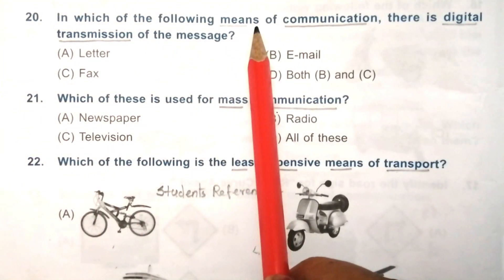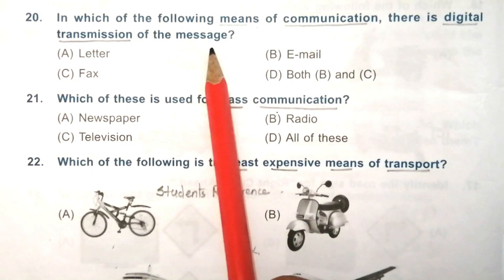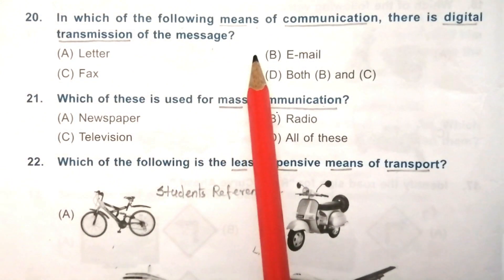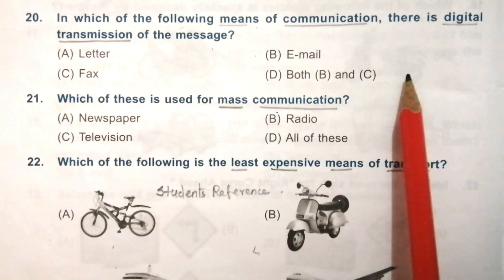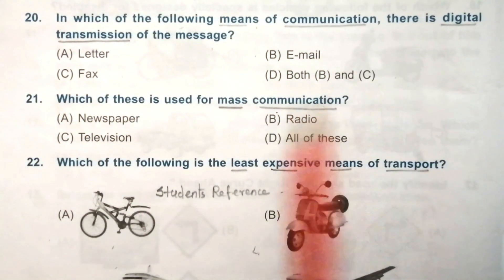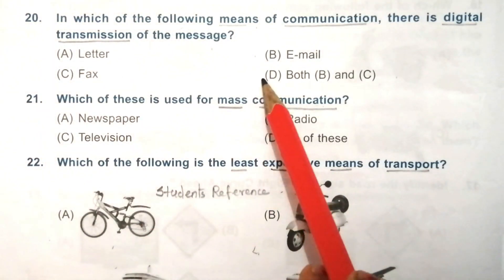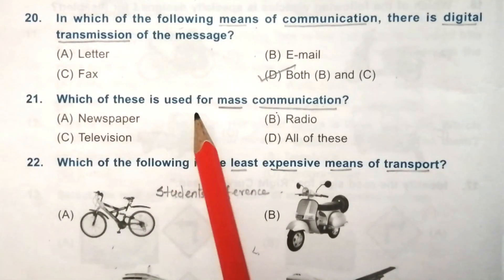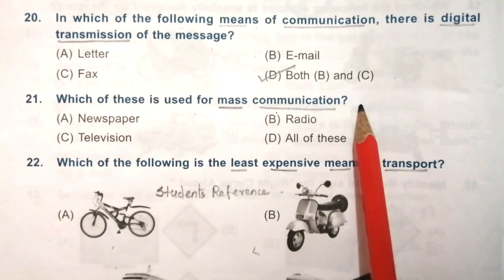Question 20: in which of the following means of communication is there digital transmission of the message? Options are: letter, email, fax, both B and C. The answer is D — both B and C, meaning email and fax.